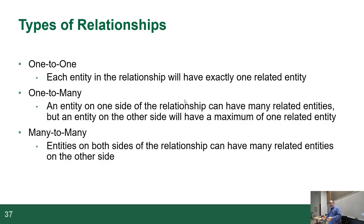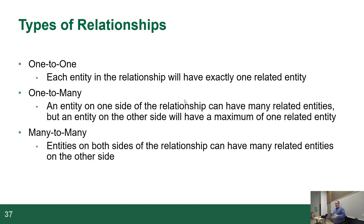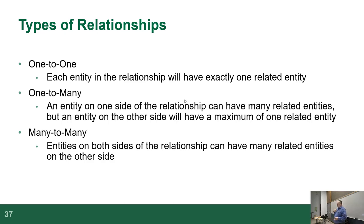We left off just before I started talking about relationships. In database design there are three kinds. There's one-to-one, which means each entity in a relationship will have exactly one related entity. There's one-to-many, which is 95% of relationships once you're done doing design — basically an entity that has many child records. A quick example in this room: as a prof I have many students, and you have one database prof.